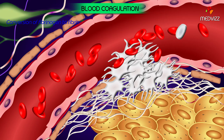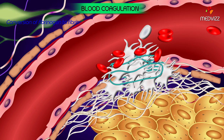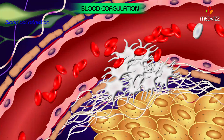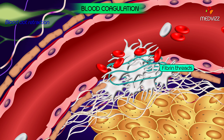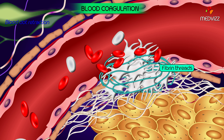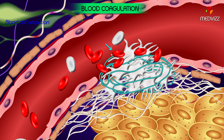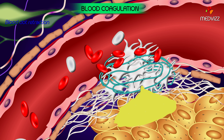The fibrin meshwork traps the remaining components of plasma and blood cells to form a solid mass called a clot. Blood clot retraction: the blood clot is composed of a meshwork of fibrin threads running in all directions, along with entrapped blood cells, platelets, and plasma. The fibrin threads adhere to the damaged surface of blood vessels. Coagulation is the property of plasma alone; RBCs and WBCs do not take part in it — they only become caught up in the meshwork. Within a few minutes after the clot is formed, it begins to contract and usually squeezes out most of the fluid, called serum.